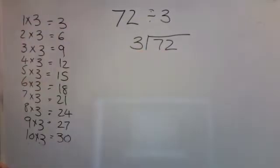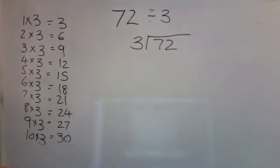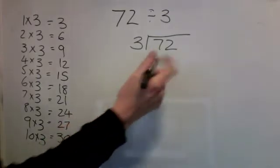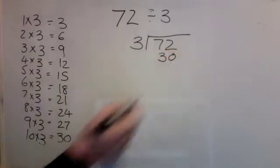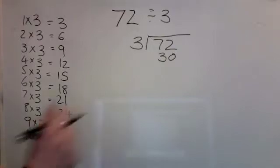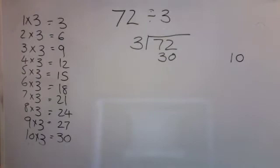72 divided by 3. My first step is to look for a number as close to 72 as possible without going over in the 3 times table. The easiest one to use is 30 — it's the biggest number I have. And to make 30, I used 10 times 3. So I'll just keep a little reminder that 30 is 10 times 3.